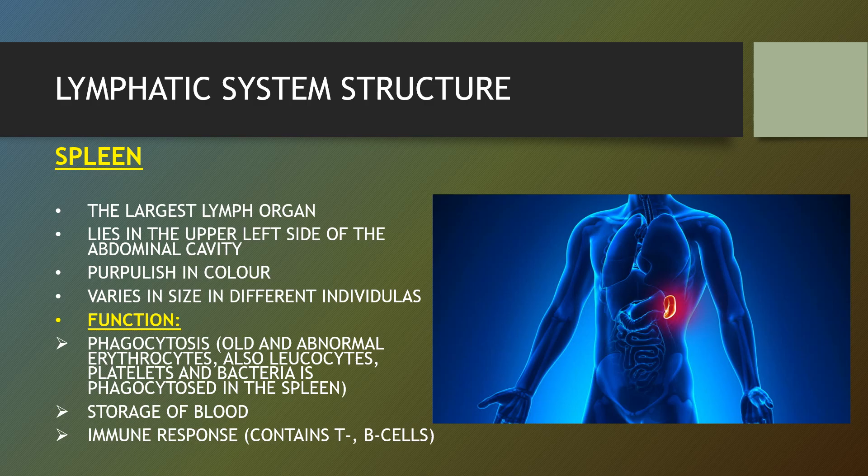The spleen recognizes old or damaged red blood cells and removes them from your body by breaking them down and saving any useful components such as iron in the process. This keeps the blood circulating in your body clean and functioning at its best. It is the largest lymph organ, lying in the upper left side of the abdomen, purplish in colour and varying in size in different individuals. Its functions include phagocytosis — which means to envelop and destroy bacteria and other foreign materials — storage of blood, immune response, and it contains T and B cells.